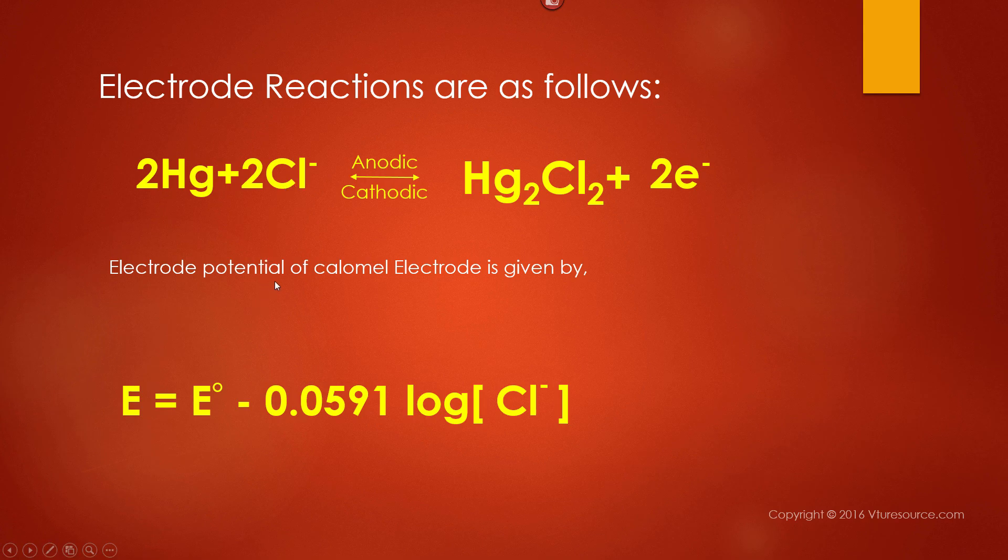As all electrodes have an electrode potential, the electrode potential of calomel electrode is determined by the Nernst equation, which is given as E equals E° minus 0.059 log[Cl⁻]. From this equation it is evident that the electrode potential of calomel electrode depends upon the concentration of Cl⁻.